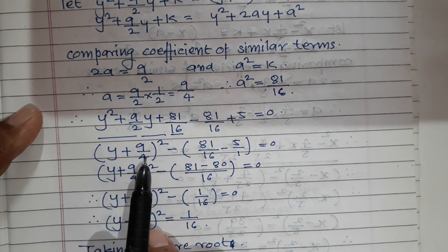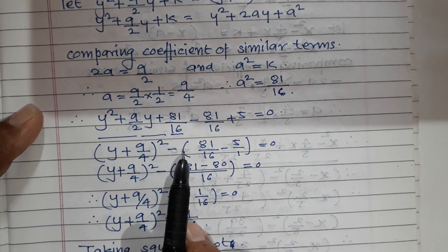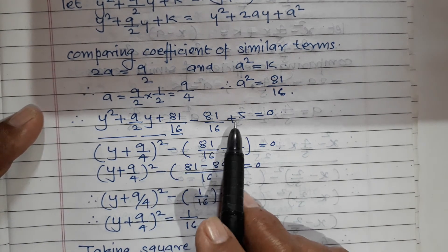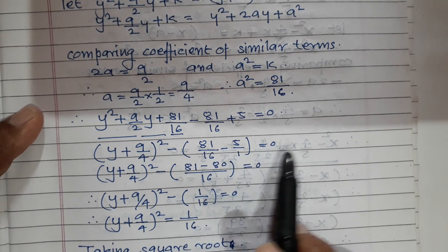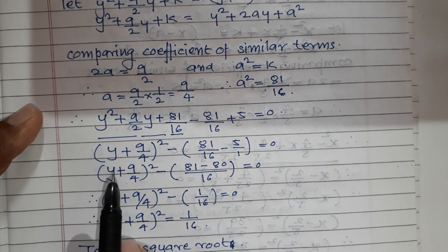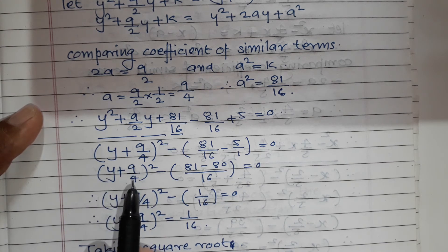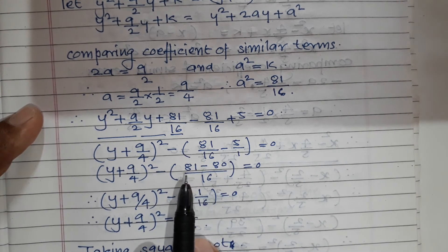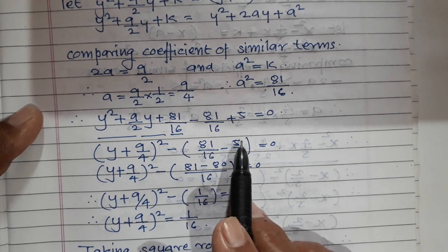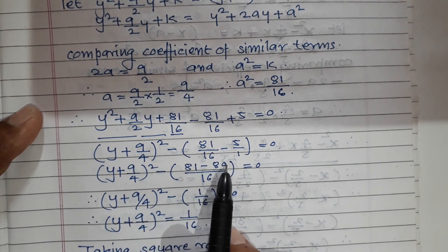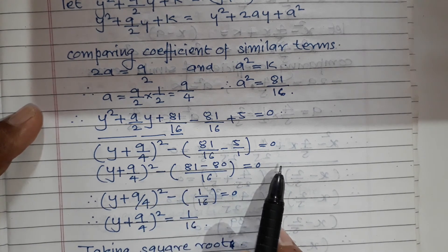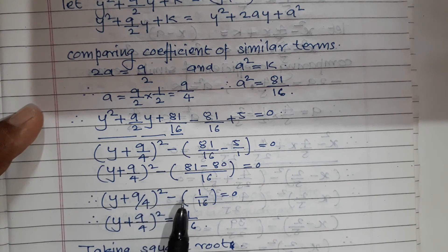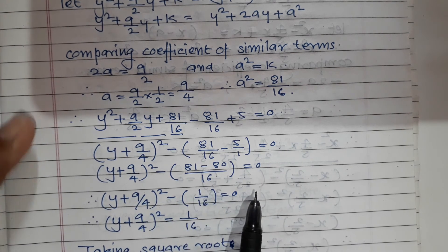The first three terms form the square (y + 9/4)². For the remaining terms: minus 81/16 plus 5. Equalizing the denominator — multiply 5 by 16 to get 80/16. So minus 81/16 plus 80/16 gives minus 1/16. Therefore: (y + 9/4)² minus 1/16 equals 0.